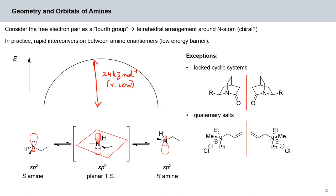This transition state has a fairly low barrier between R and S enantiomers. Exceptions are locked cyclic systems where the nitrogen cannot simply flip around. In those cases, you have a mirror plane and the two molecules are genuine mirror images that cannot be superimposed by rotation or translation — these are real enantiomers. The same applies to quaternary salts, which also exist as genuine enantiomers.